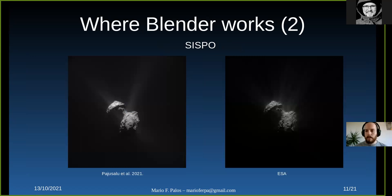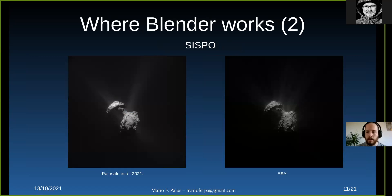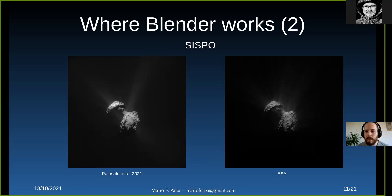Another example from the CSPOT team: on the right you can see a real image of comet 67P, and on the left a rendering of the same comet with the gas rendered in Blender. It's not exactly the same, but it is pretty realistic, and for a lot of purposes this is perfectly fine. If you don't go very deep into what the exact molecules are doing, Blender is perfectly fine for this kind of thing.